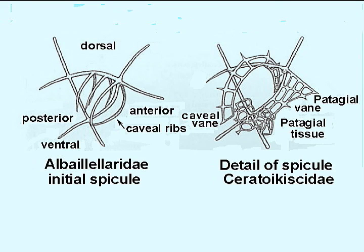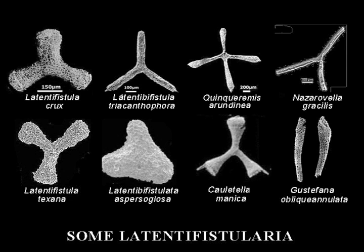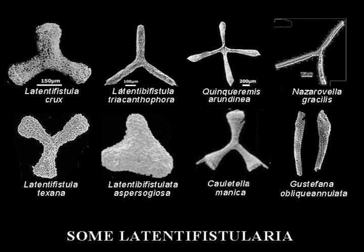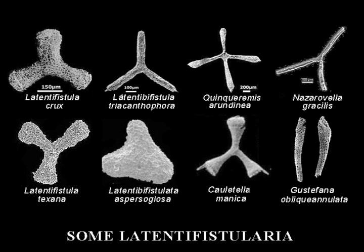Latentifistularia appear in lower Carboniferous strata and are numerous in Permian rocks. Their small initial cell, spongy surfaces, and triangular disposition make for easy recognition.